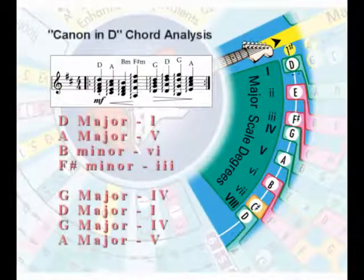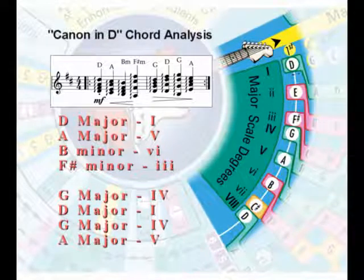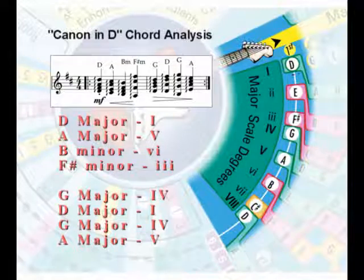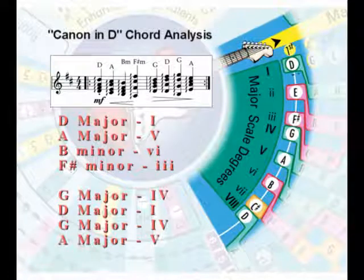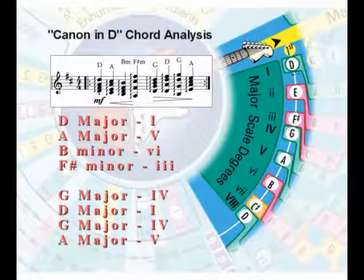I'd like to talk about the chords used in the Canon in D. In the first bar of the song, our chords would be a D major, A major, B minor, and F sharp minor — a one, five, six, three progression. The second measure has a G major, D major, G major, A major — which would be a four, one, four, five progression.